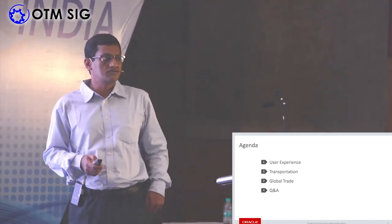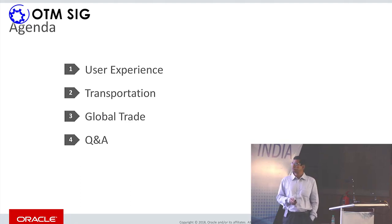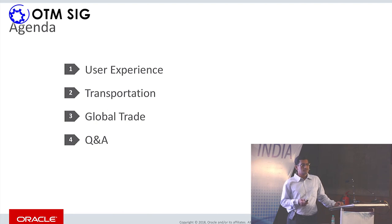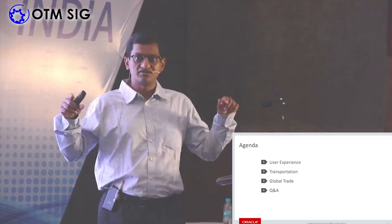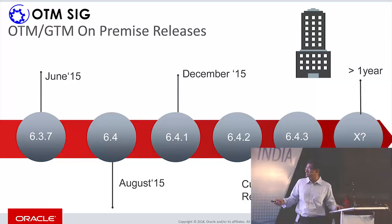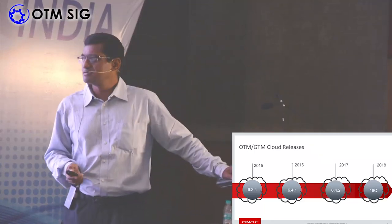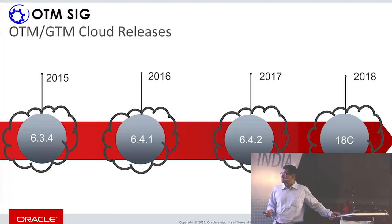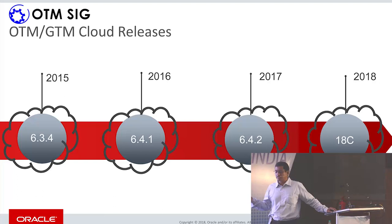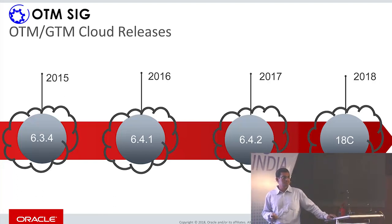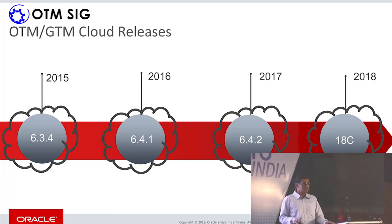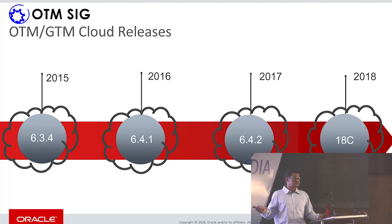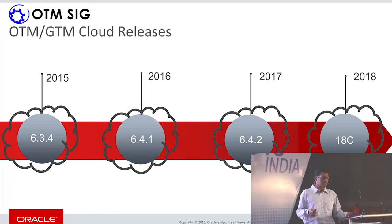This is the agenda for the next three minutes, followed by Q&A. We will start with the user experience area. On the cloud side, we started with 6.4.1, 6.4.2, and now 18c. As we speak, 18c has started rolling out and 18c is essentially all the capabilities in 6.4.3 on-premise — exactly those features in 18c plus some enhancements and bug fixes.